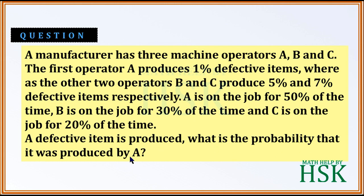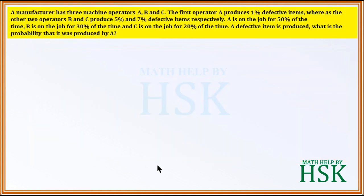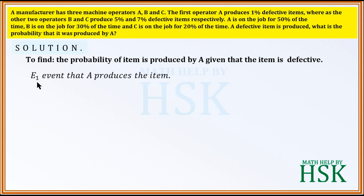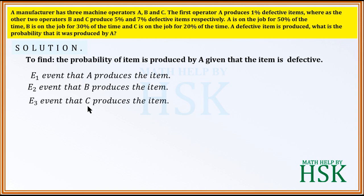A defective item is produced. We are required to calculate the probability that it was produced by A, given that the item is defective. We define: E1 = event that A produces the item, E2 = event that B produces the item, E3 = event that C produces the item, and D = event that the item is defective.